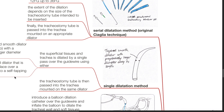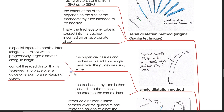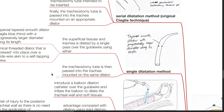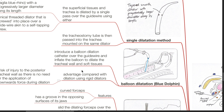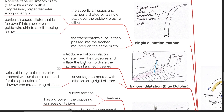Single dilatation method: the superficial tissues and trachea are dilated by a single pass over the guide wire using either a special tapered smooth dilator — the Ciaglia Blue Rhino, with a progressively larger diameter along its length — or a conical threaded dilator that is screwed into place over a guide wire akin to a self-tapping screw. The tracheostomy tube is then passed into the trachea mounted on the same dilator. Balloon dilatation — Blue Dolphin: introduce a balloon dilation catheter over the guide wire and inflate the balloon to dilate the tracheal wall and soft tissues. Advantage: decreased risk of injury to the posterior tracheal wall as there is no need for application of downward force during dilation.